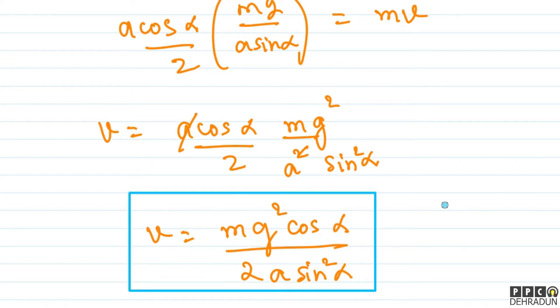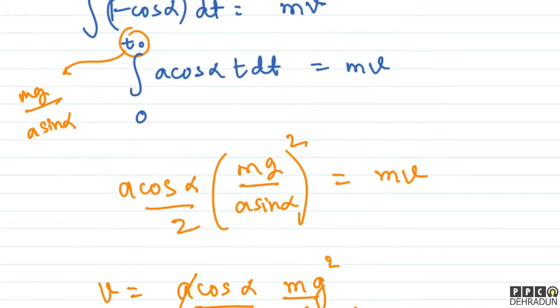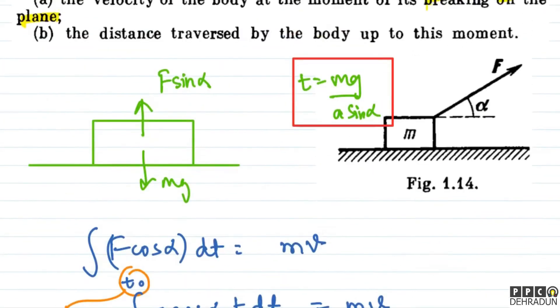यह हमारे पास final velocity की value आ रही है t₀ time के बाद, जहाँ t₀ वो moment है जब यह finally surface से break off कर जाता है। तो यह हमारे पहले part का जवाब आ गया।